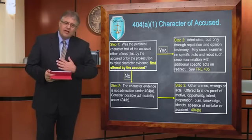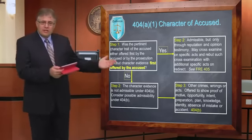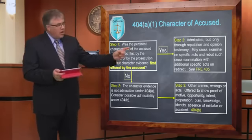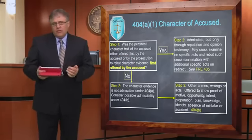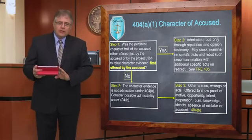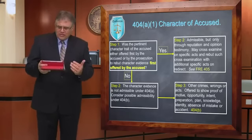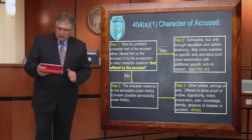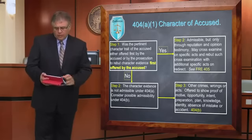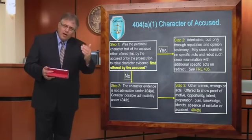If that's not the case and the character trait is not admissible under 404(A), and I'm the state, I've got to consider trying to get it in through the 404(B) door — other crimes, wrongs, or acts offered for a non-character theory of relevancy. But I can't offer it simply to say that because the accused was a bad person in the past, it's more likely they did it this time. If I'm going to offer it under 404(B), I've got to show I'm offering it not for propensity, but to show a particular motive, opportunity, intent, preparation, plan, knowledge, identity, or absence of mistake. Those are all classic 404(B) theories of admissibility — non-character theories of relevancy.